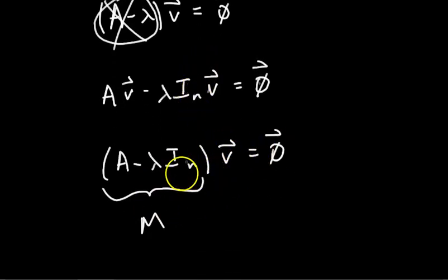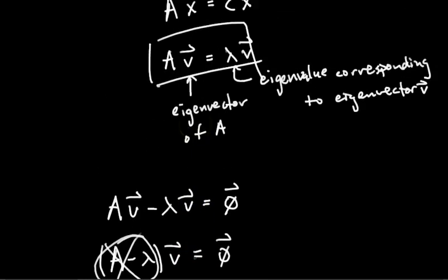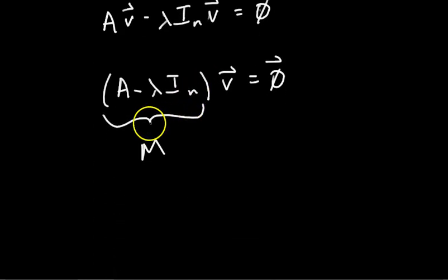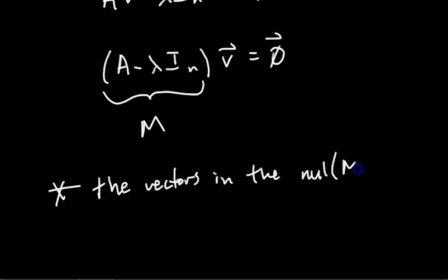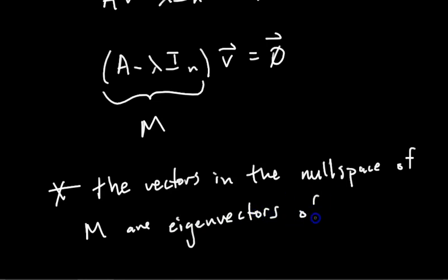So this is so important. The vectors that satisfy this equation are in the null space of M, because this is the homogeneous equation. So the vectors in the null space of M, which is just A minus lambda I_n, are the eigenvectors of A. And so if that doesn't make sense to you immediately, then just copy this down and think about it. So the vectors in the null space of M are eigenvectors of A.